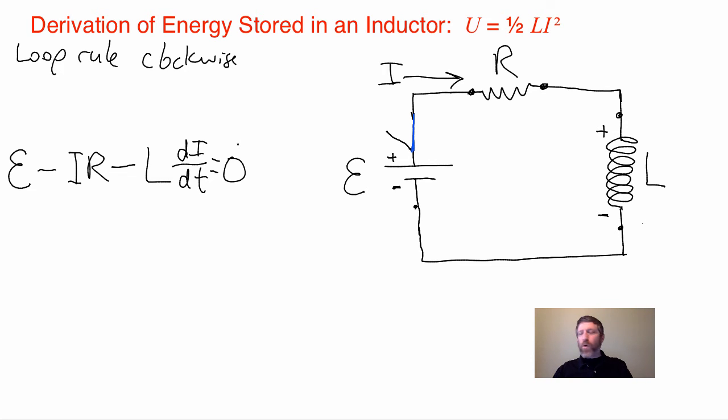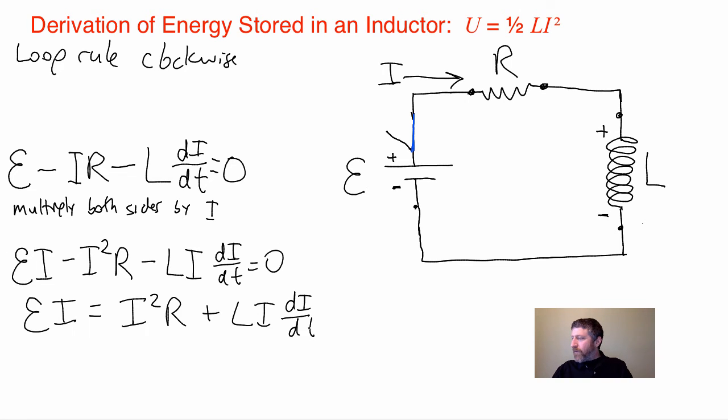Now what I'm going to do is I'm going to multiply both sides by I. And this will give me EI minus I squared R minus LI dI/dt equals zero. I'm going to rearrange this slightly. Now this equation actually makes a lot of sense because EI, this is the voltage across the battery times the current through the battery. This is the power delivered by the battery. And so that's like some number of joules per second that's being provided by this battery. It's got to go somewhere.